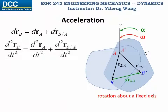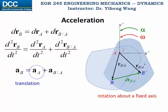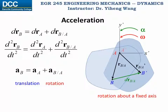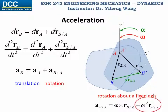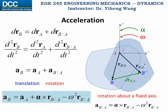Similarly, if we take the second time derivative of this equation, we get the equation that relates the linear acceleration of two arbitrary points in the same rigid body undergoing general plane motion. The linear acceleration of particle B has two contributions: A_A, the linear acceleration of particle A, represents the contribution from translation, and the relative acceleration of B with respect to A represents the contribution from rotation. For rotation about a fixed axis, the linear acceleration has two components: tangential acceleration and normal acceleration, giving us the full equation for absolute linear acceleration.